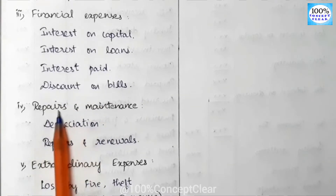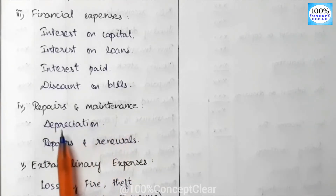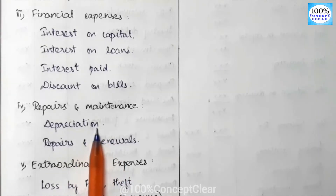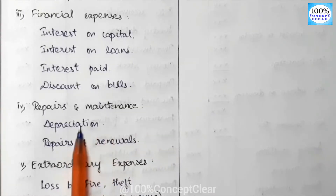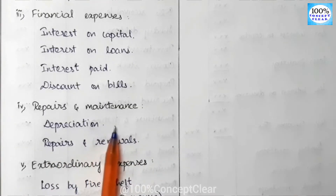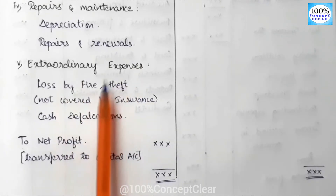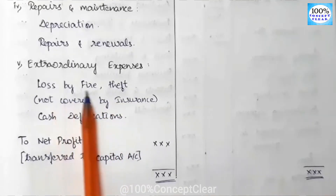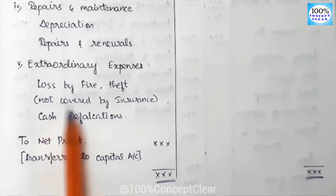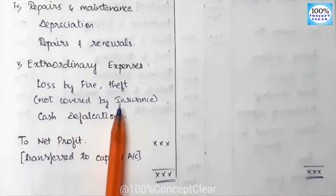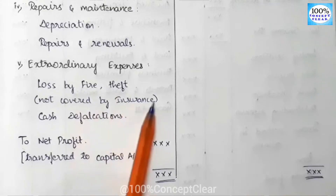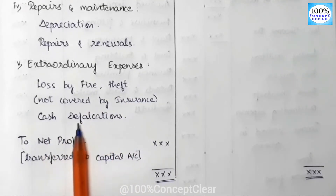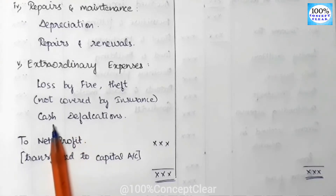Next, repairs and maintenance expenses. The first item is depreciation — for our assets we calculate yearly depreciation as an expense. Then repairs and renewals — for machinery, we pay for any repairs or renewals. Next are extraordinary expenses, such as loss by fire or theft. If we are not covered by insurance, we record that loss as an expense.